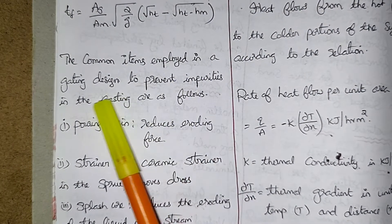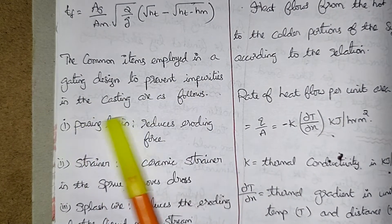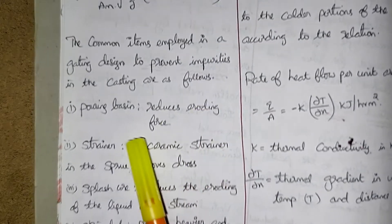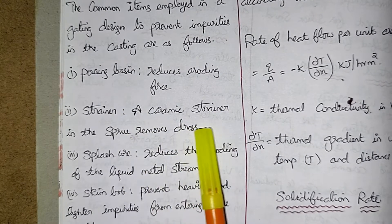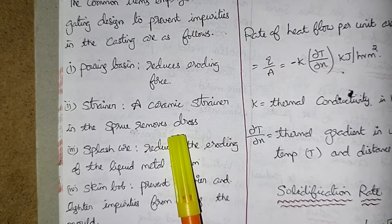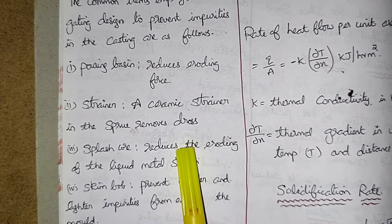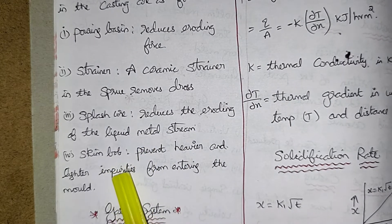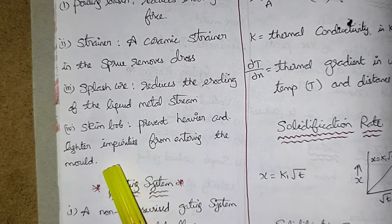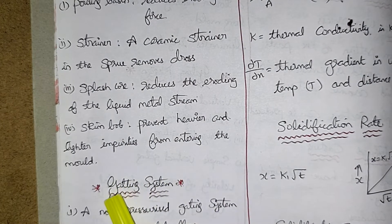The common items employed in a gating design to prevent impurities in the casting are as follows: pouring basin reduces eroding force, strainer - a ceramic strainer in the sprue removes dross, splash core reduces the eroding of the liquid metal stream, skim mop prevent heavier and lighter impurities from entering the mold.